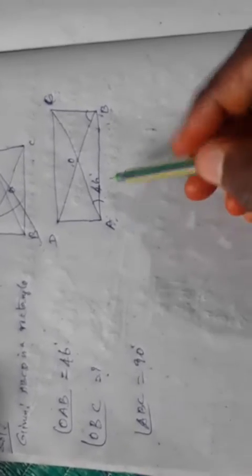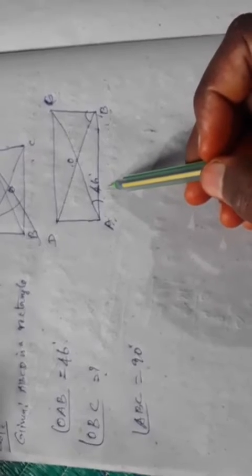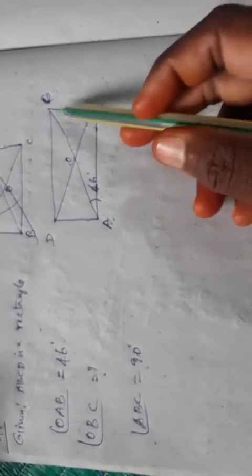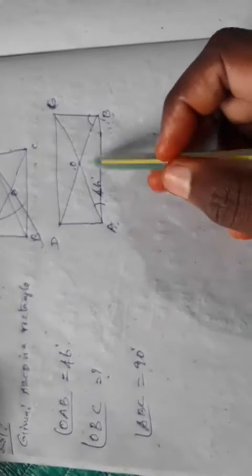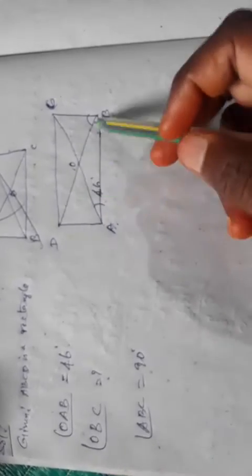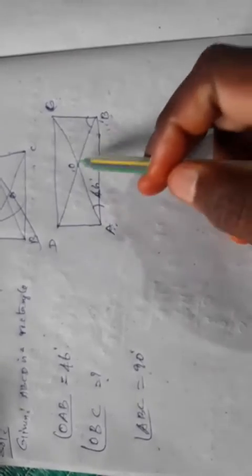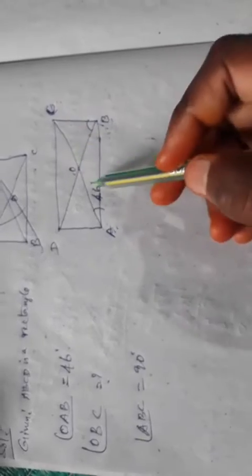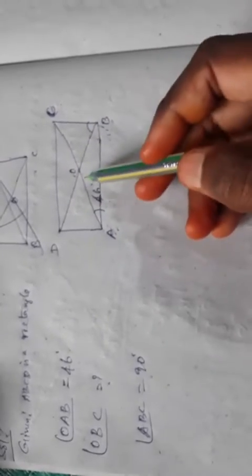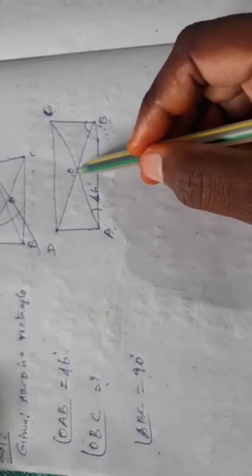Now we will use the property that diagonals bisect each other. Diagonal AC and diagonal BD bisect each other at O. So OB equals OD, and OA equals OC. All four half-diagonals from the center point O are divided equally: OA = OC and OB = OD.